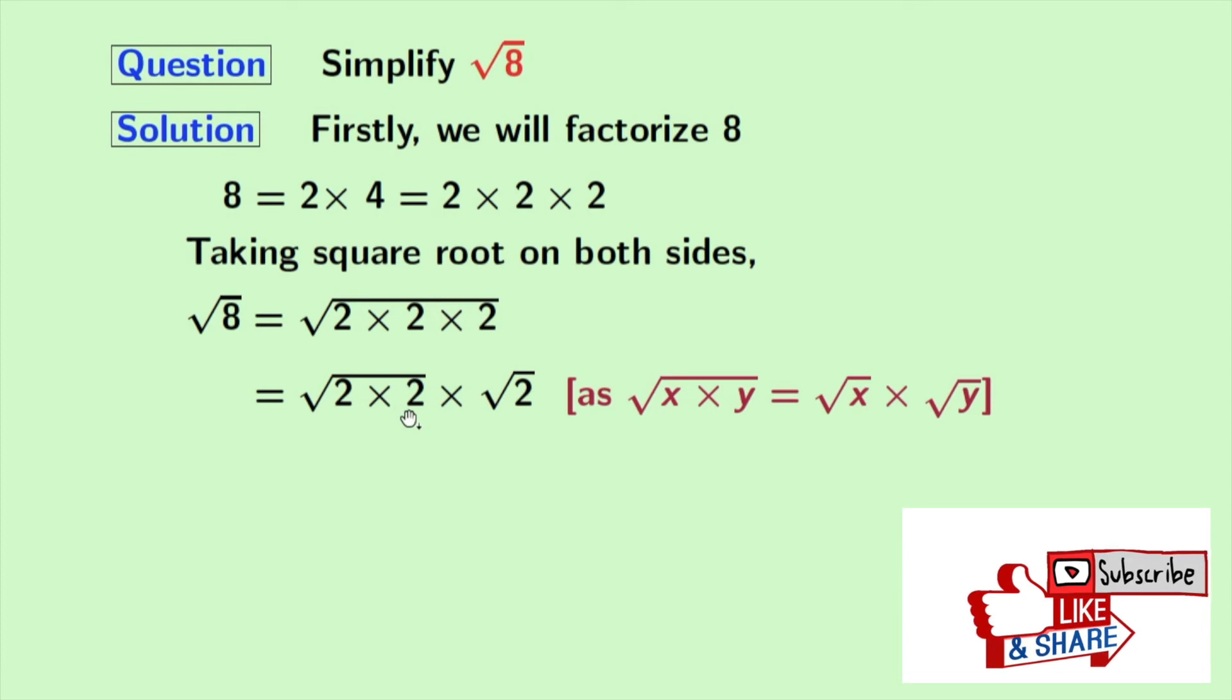Now, from the first square root, we get 2 and the second square root, that is square root of 2, remains the same.